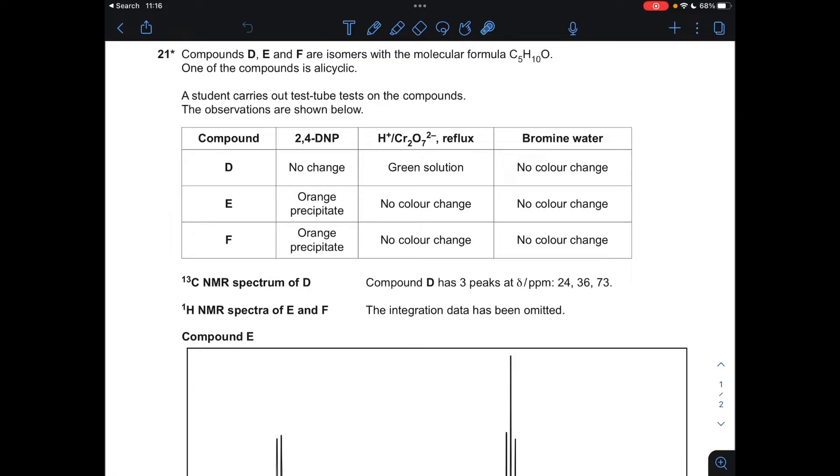So we've got three isomers, D, E and F. We've got the molecular formula, and we're told that one of them is alicyclic. So that means it's a ring, but it's not a benzene ring. And of course, it can't be a benzene ring anyway, because we've only got five carbons.